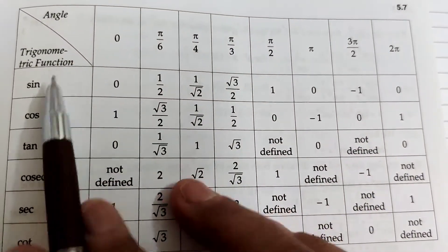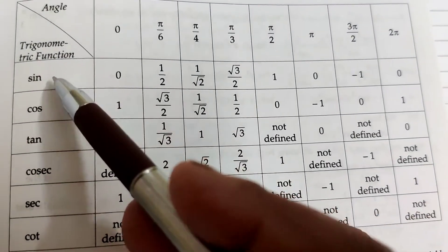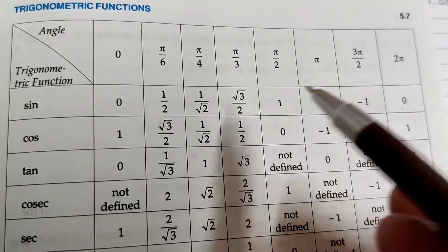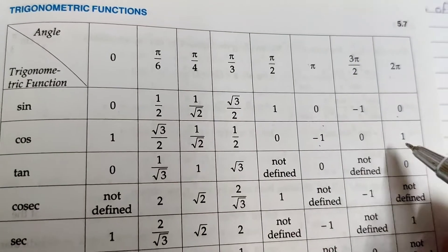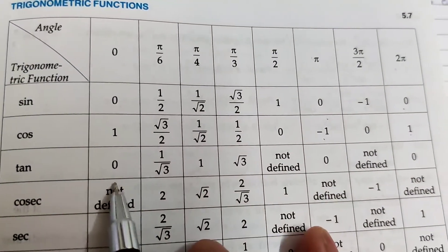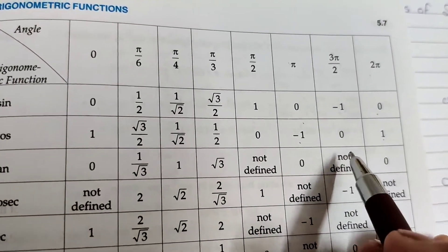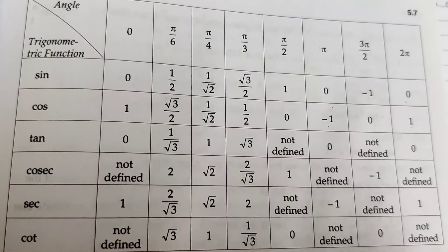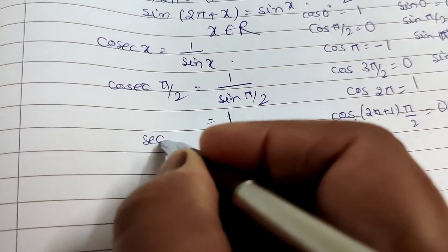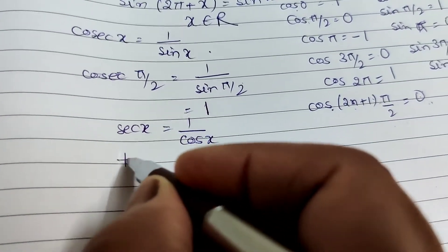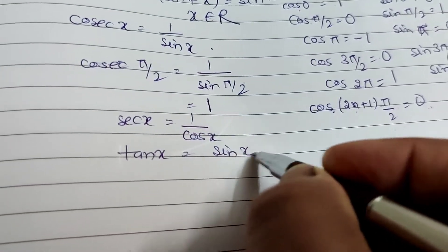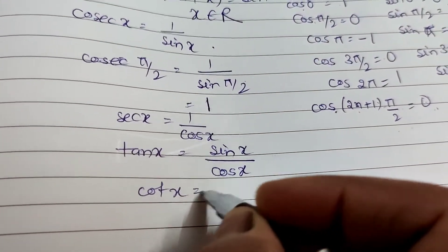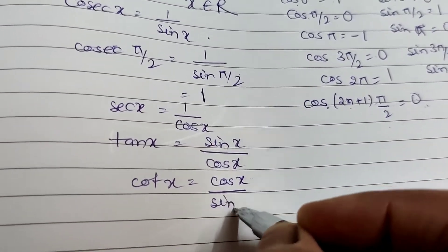These are the values of different trigonometric ratios at standard angles. sin 0° = 0, sin π = 0, sin 2π = 0; cosec values are 1, -1, 1 respectively. tan 0° = 0, tan 90° is not defined, tan(3π/2) = 270° is not defined, tan 2π = 0. sec x is the reciprocal of cos x, tan x = sin x/cos x, and cot x = cos x/sin x, which is the reciprocal of tan x.